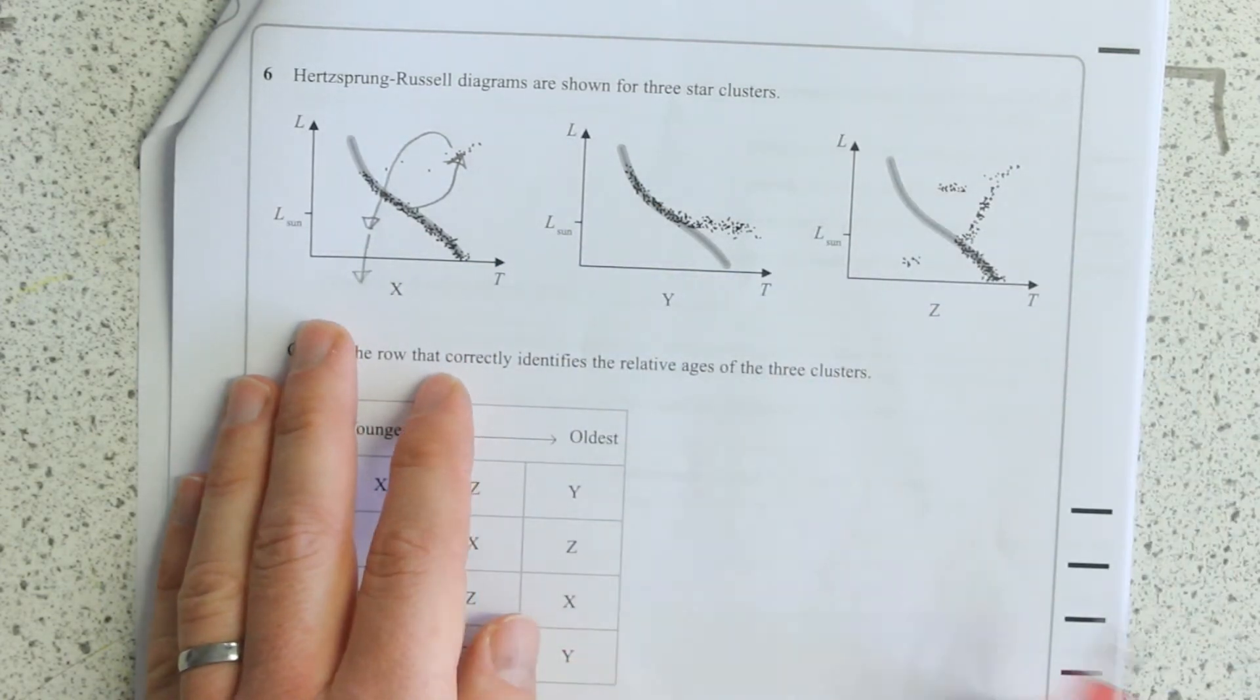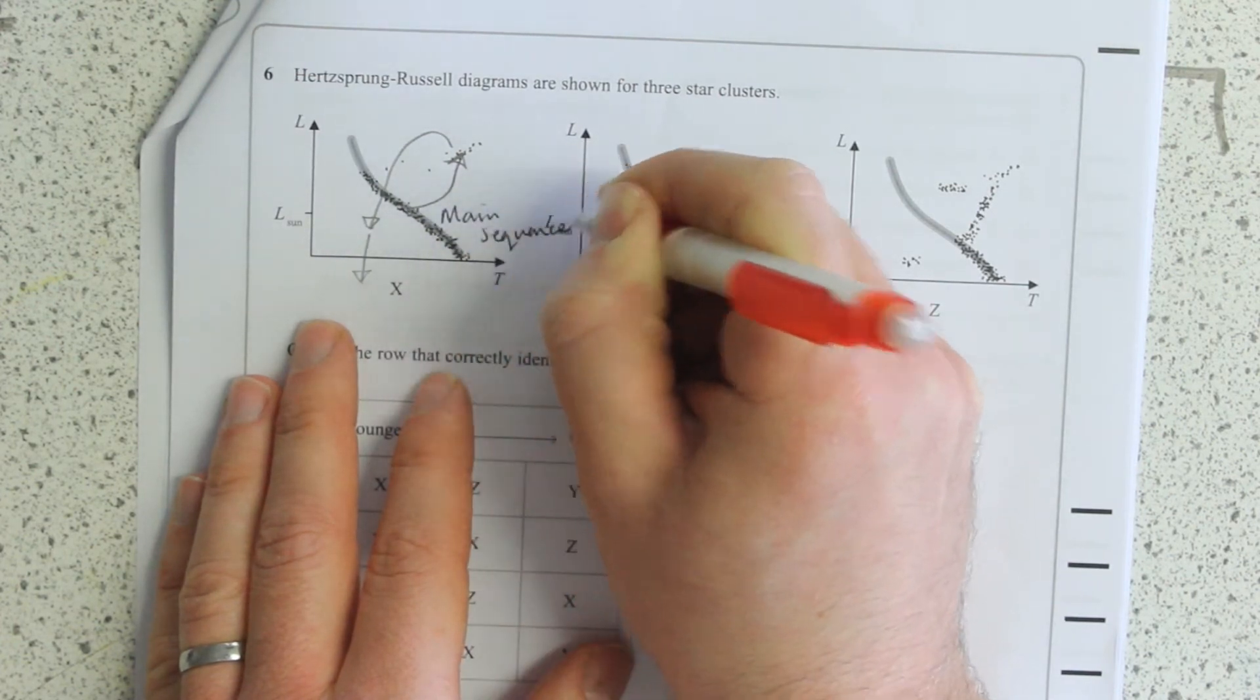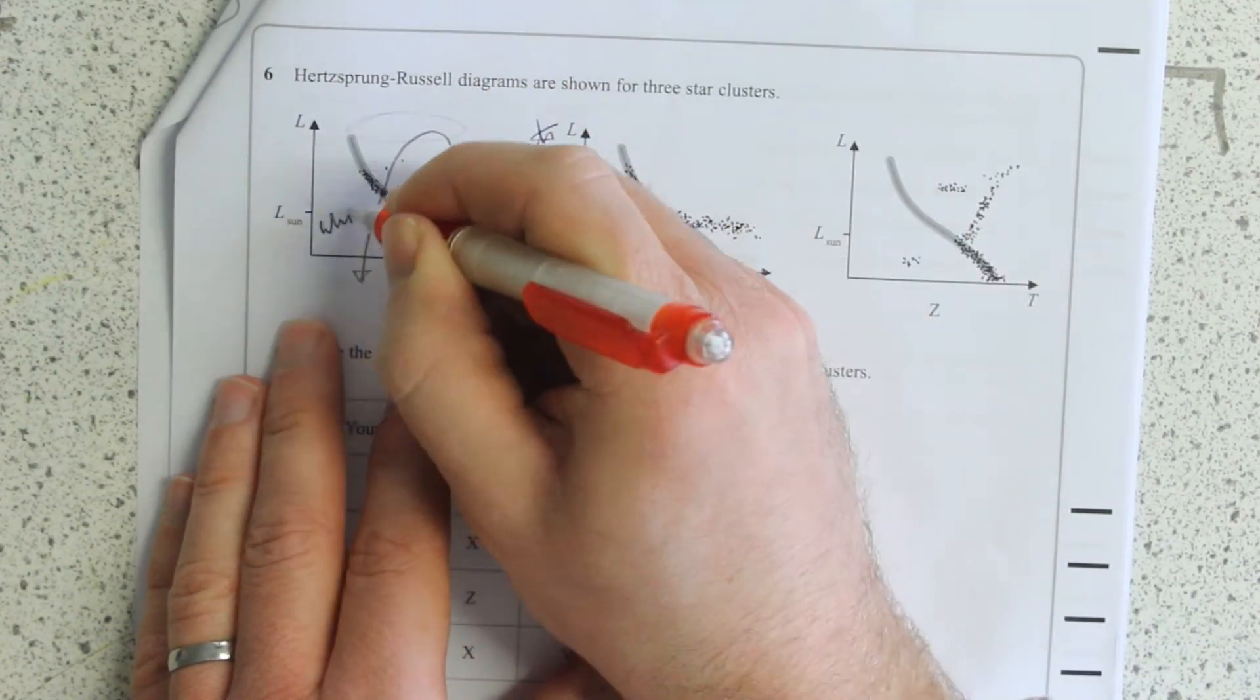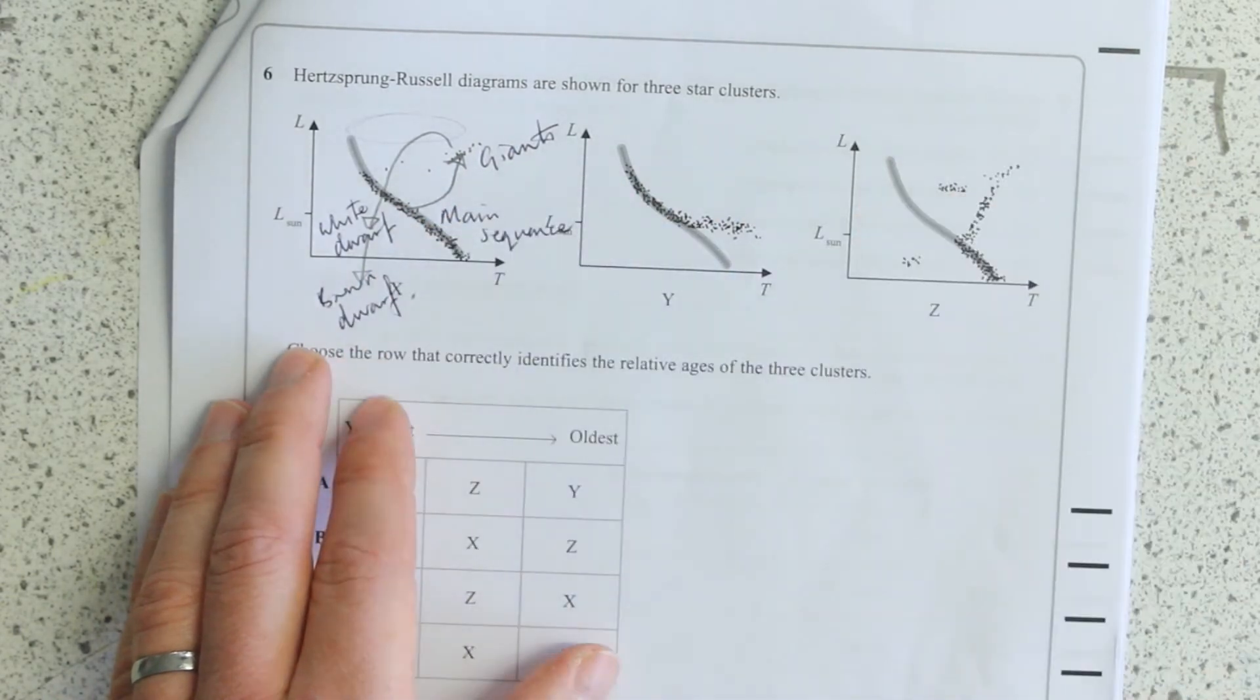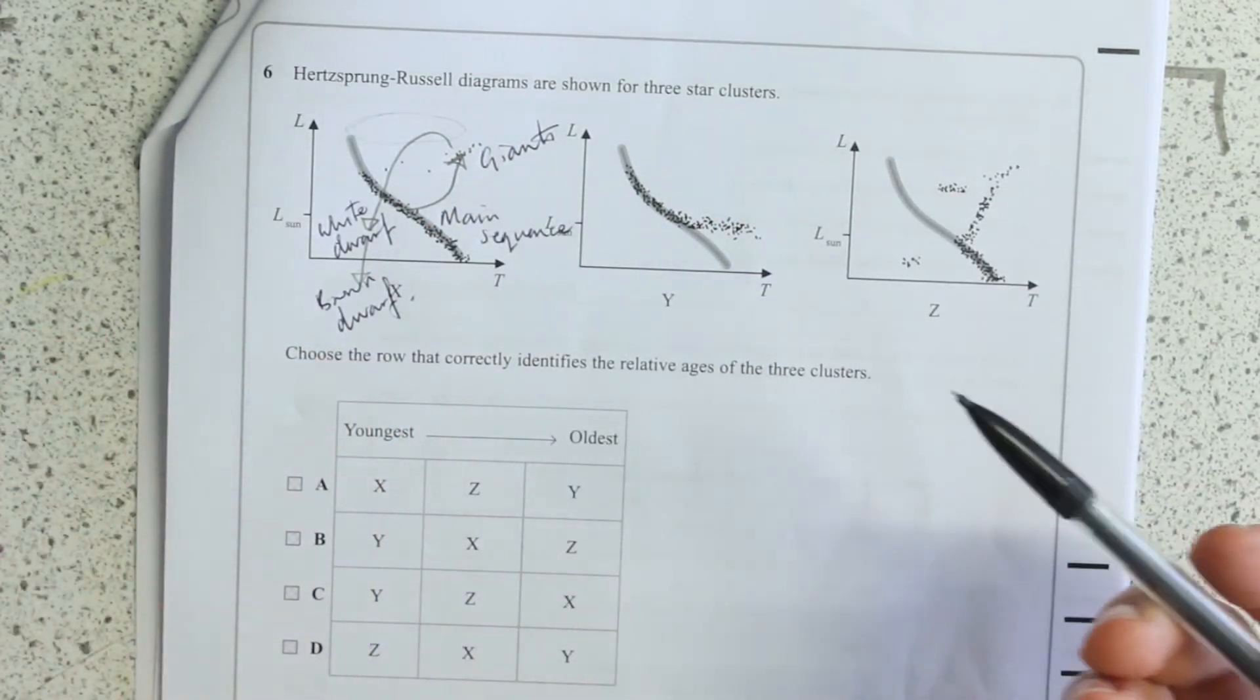Okay, so I'll maybe just label them up quickly so we've got everything where it should be. So which one is the oldest, essentially, or which was the youngest to the oldest?